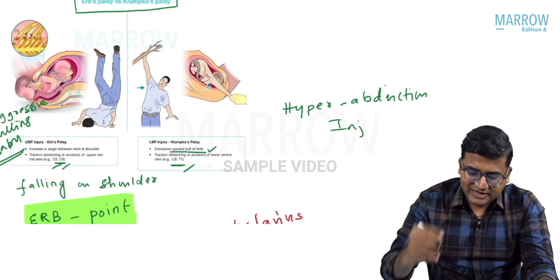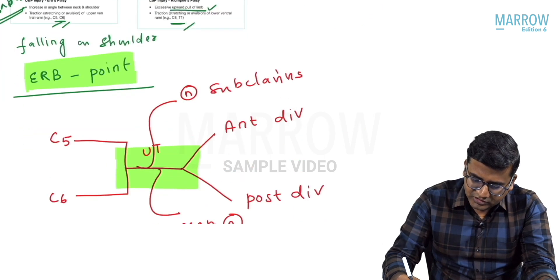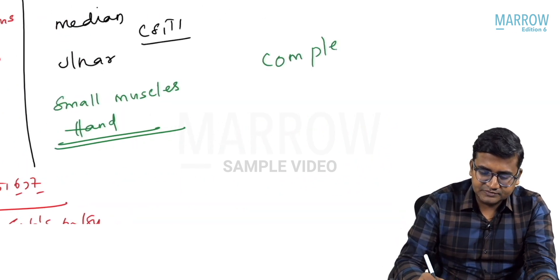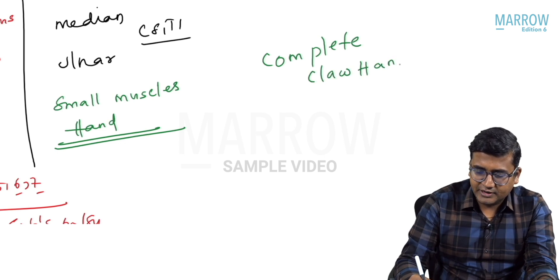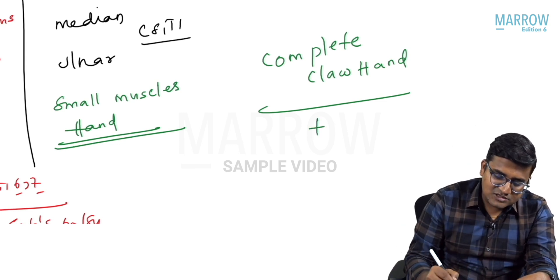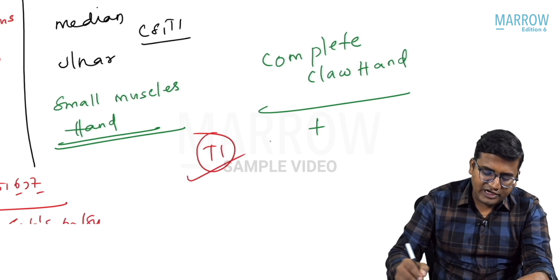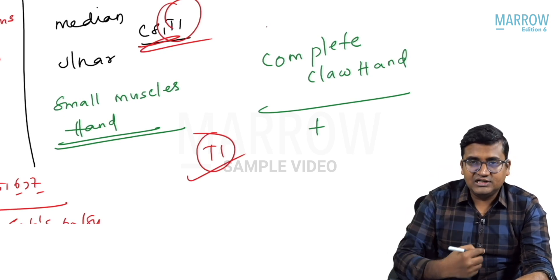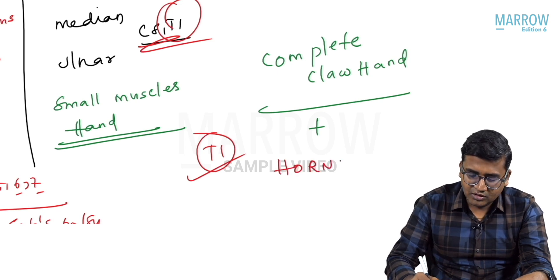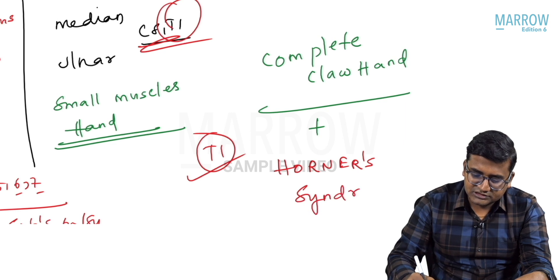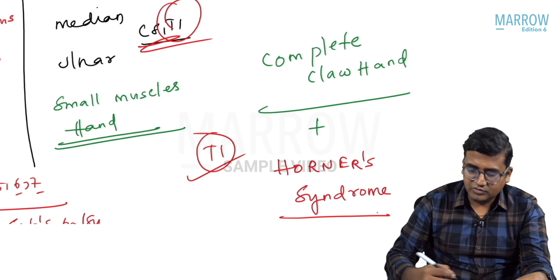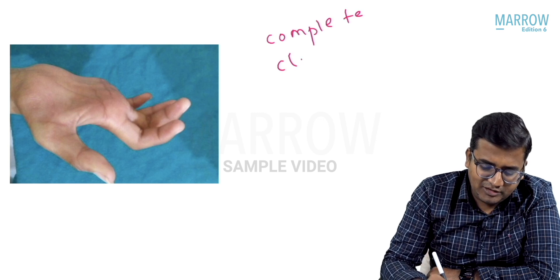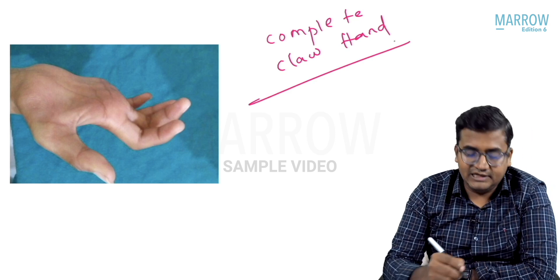In Klumpke's palsy, the median nerve and ulnar nerve are affected, so the small muscles of the palm are paralyzed. The patient will have a complete claw hand. Additionally, T1 sympathetic fibers are involved, which results in Horner syndrome.